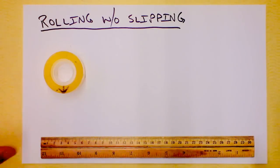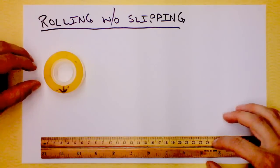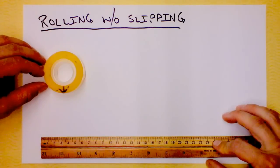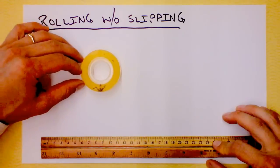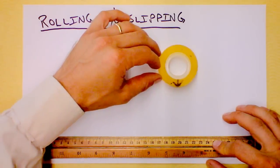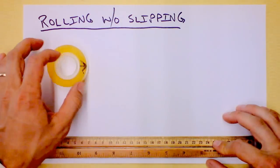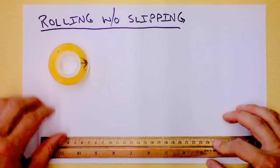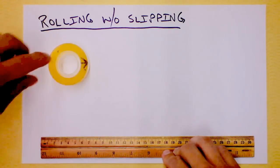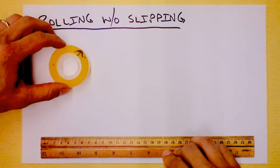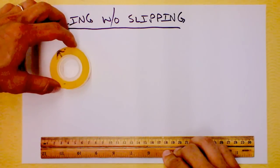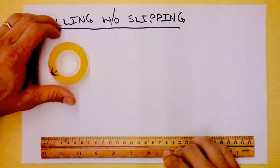There's translation, and we've spent a great deal of time talking about translation so far. So translation would be the center of the mass is moving. And then of course there's also rotation. We've just started talking about rotation, so a positive rotation would look like this. The center of mass is at rest, yet there's spinning happening.